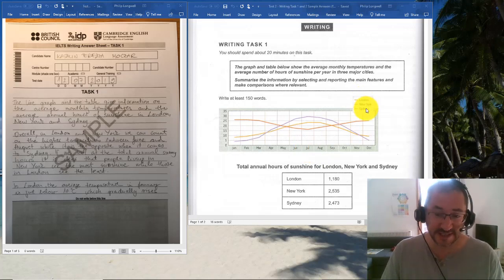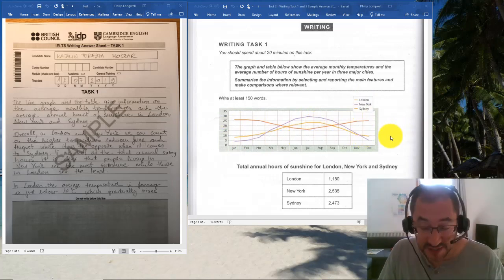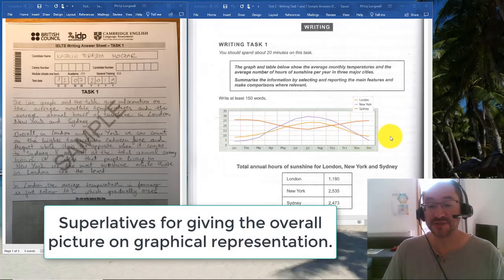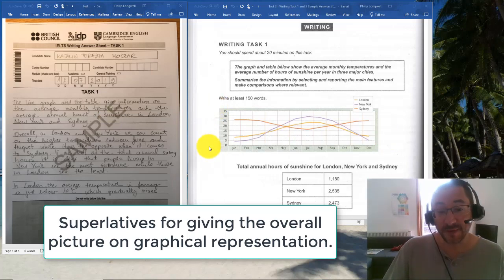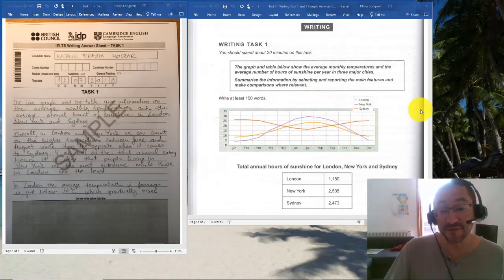We're looking at superlatives—the most, the least, the greatest, the longest. It's correct to talk about this being over the whole year, so it is annual, but we only got the word annual in terms of the total hours of sunshine.